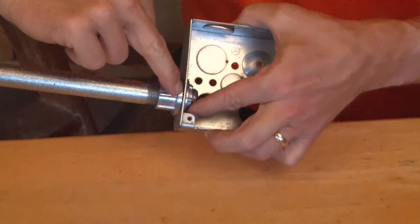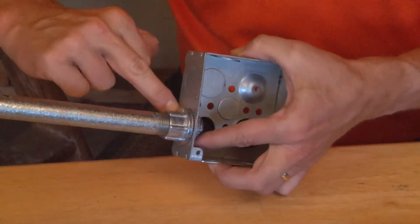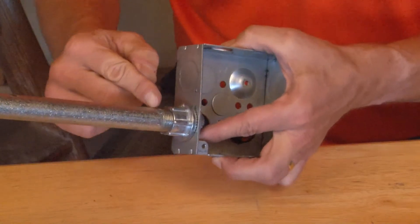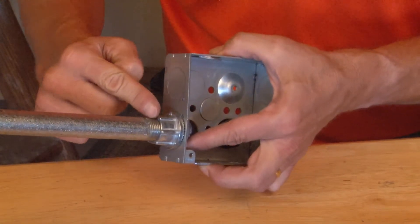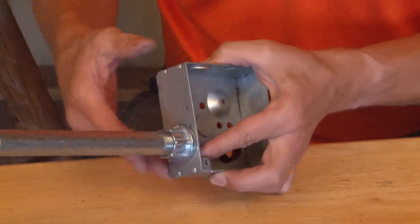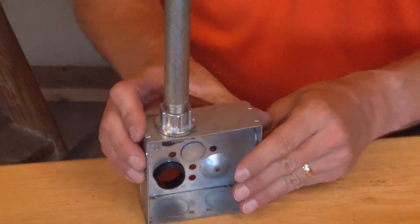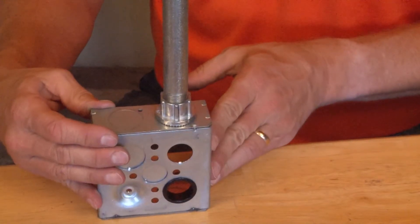The rubber washer creates a watertight seal on the outside of the conduit, and the conduit, which has a tapered thread, creates a watertight seal into the connector. And you've completed a perfect watertight fitting on a standard electrical box.